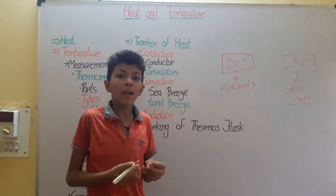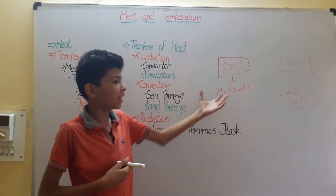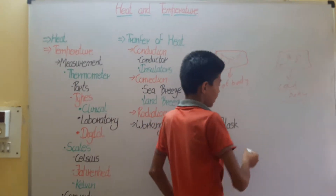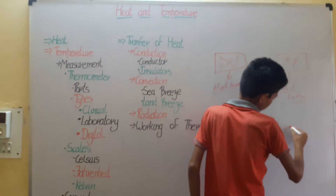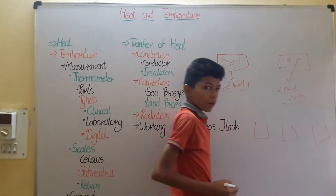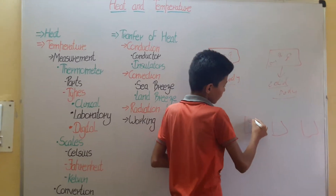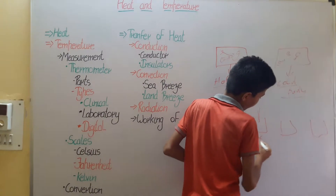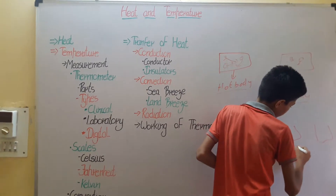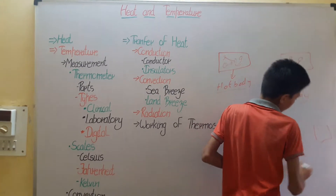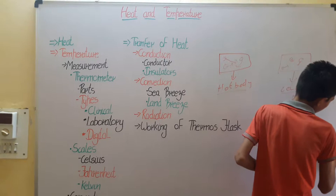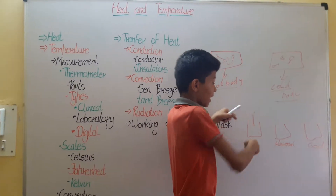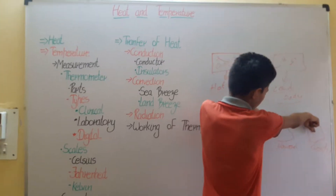How can we visualize heat? We have seen the heat. Then how can we feel the heat? Take three containers. In the first there is hot water, in the second normal water, and in the third cold water. Dip two of your fingers in the hot and cold water.